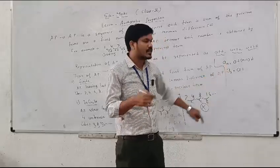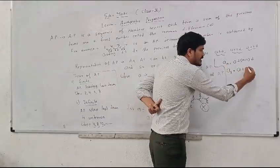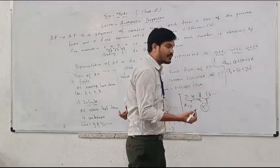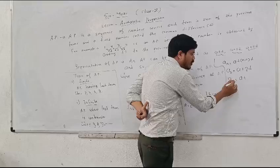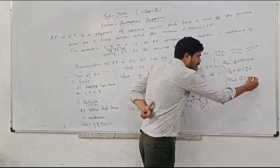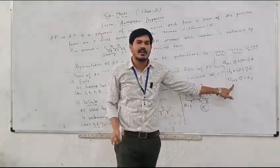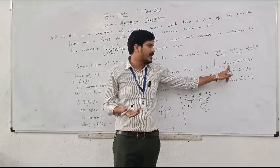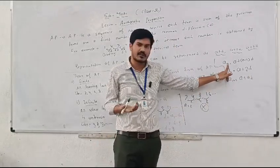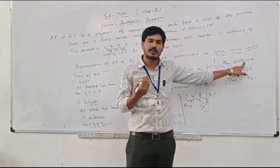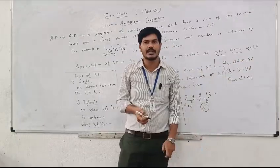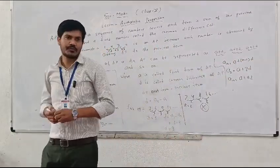For example, to find the third term, we write A plus 2D, taking one less than 3. If we want to find A10, we write A plus 9D. This way we can find any term of the given AP. The last term AN can be found using the formula where A is the first term, N is the number of terms, and D is the common difference.